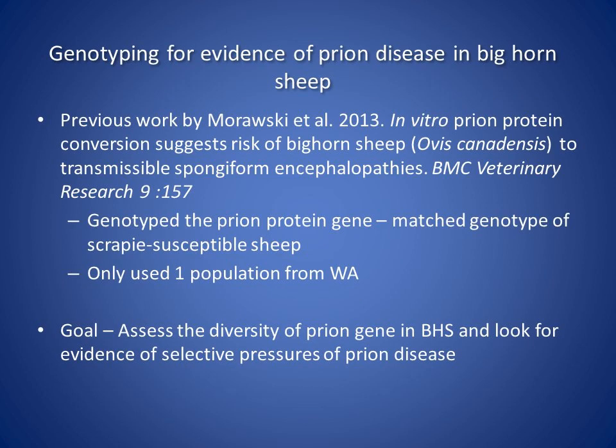This work is based on Murawski et al. 2013, where they conducted an in vitro conversion assay demonstrating that the prion protein of bighorn sheep could be converted to a misfolded isomer form when seeded with prions from CWD or scrapie. They genotyped the prion gene of about 20 bighorn sheep from Washington and found it aligned with the ARQ genotype of domestic sheep, known to be scrapie susceptible. Our goal was to expand that project across a broader range, including subspecies, to assess diversity of the prion protein gene and look for evidence of past selective pressures.